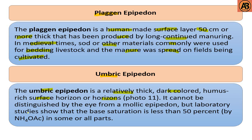The next one is the umbric epipedon. The umbric epipedon is a relatively thick, dark-colored, humus-rich surface horizon or horizons. It cannot be distinguished by the eye from a mollic epipedon, but laboratory studies show that the base saturation is less than 50 percent in some or all parts. That was the surface diagnostic horizons.